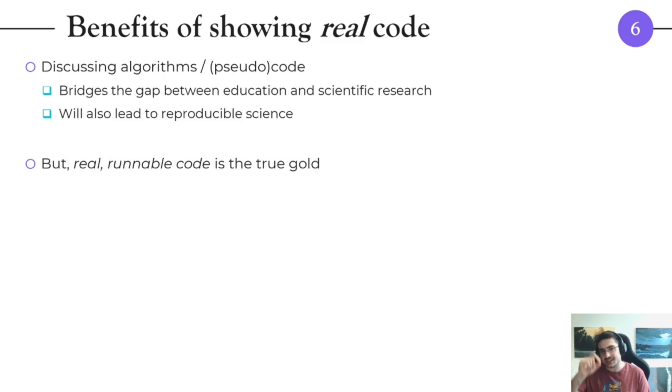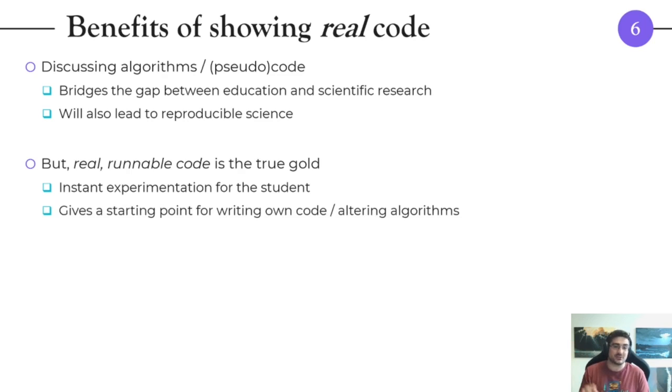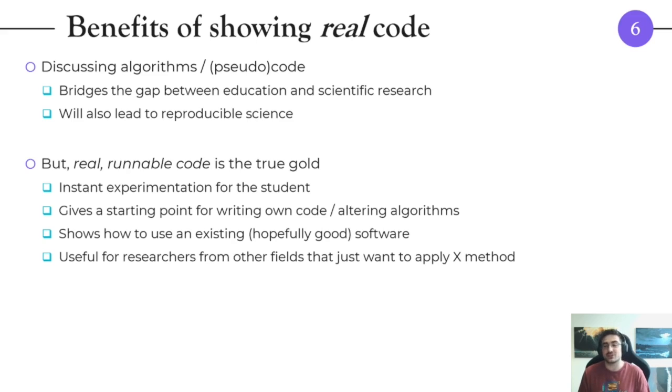I think having the real runnable code is the true gold. Why? Because many things: First of all it gives you instant experimentation for the student. Second, it gives a starting point so the student can take the code and not only experiment with it but alter it and adapt it accordingly to a new situation. Furthermore, showing code shows you how to use an existing and hopefully good software library. Lastly, let's not forget researchers from other fields. Imagine senior scientists that are already outside the learning phase and the student phase—they heard about method X and they really need to apply it. These people may not have the time to go through an entire semester of lectures but they would still appreciate having a usable code snippet.